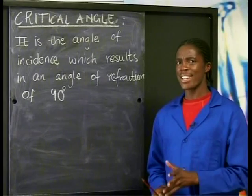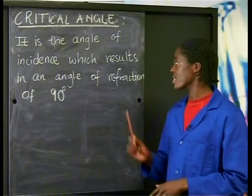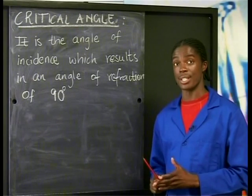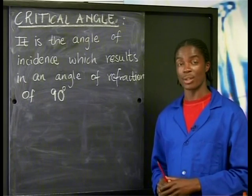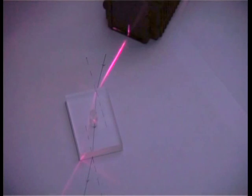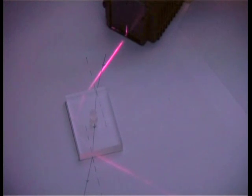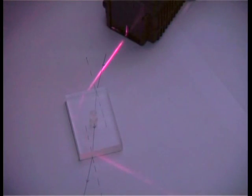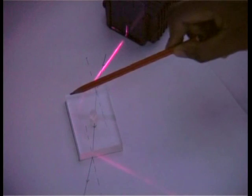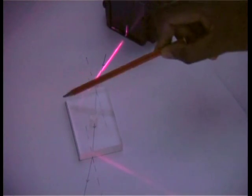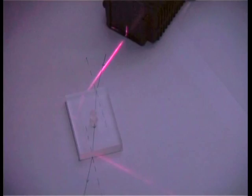The critical angle of any substance is the angle of incidence which results in an angle of refraction of 90 degrees. This angle changes depending on the substance. Watch what happens when I increase the angle of incidence so that it's bigger than the critical angle. Notice how the light is no longer refracted, but now it's reflected inside the block. No light crosses the boundary at this point. This type of reflection is called total internal reflection.